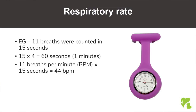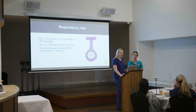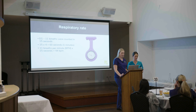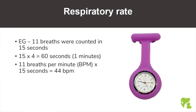The respiratory rate can be counted on either inspiration or expiration. The common abbreviation used in clinic is RR. The depth of respiration also needs to be assessed, as this indicates the amount of air inspired into the lungs. The normal reference range for dogs is approximately 10 to 30 breaths per minute and 20 to 30 for cats. To calculate the respiratory rate, count breaths over a 15-second period and multiply by four. For example, 11 breaths in 15 seconds gives 44 breaths per minute.